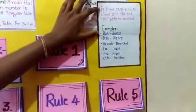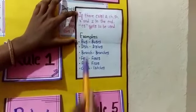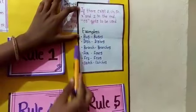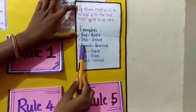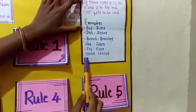Second rule: if there exist S, C, H, SH, X, and Z in the end, ES gets to be added. Examples: bus-buses, dish-dishes, branch-branches, fox-foxes, fizz-fizzes, catch-catches.